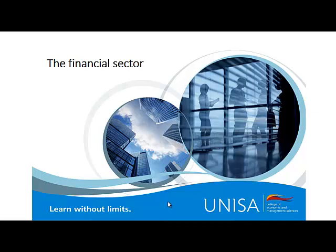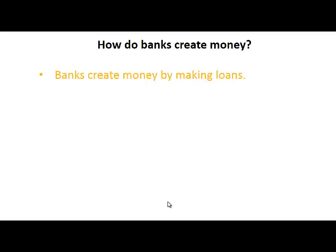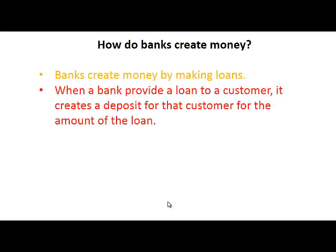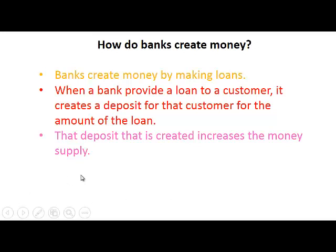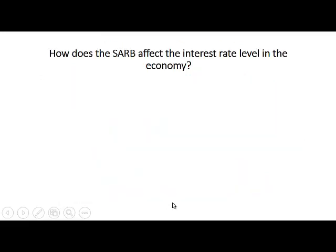This set of slides is about the financial sector, and this specific presentation is about interest rates and the Reserve Bank. We explain how banks create money. Banks create money by making loans. When a bank provides a loan to a customer, it creates a deposit for that customer for the amount of the loan, and that deposit increases the money supply, because money is cash plus deposits.